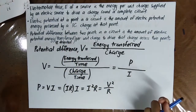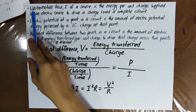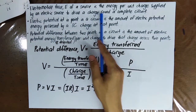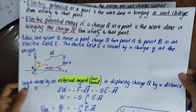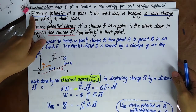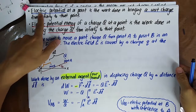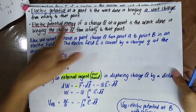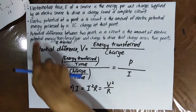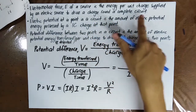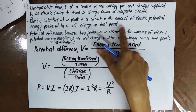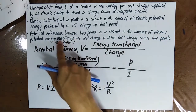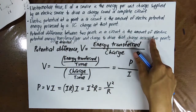If you are asked to give the definition of electromotive force, this should be your answer: the electromotive force E of a source is the energy per unit charge supplied by an electric source to drive a charge around a complete circuit. You still remember what we learned in the electrostatics chapter? The electric potential at a point in a direct current circuit is the amount of electric potential energy possessed by one coulomb charge at that point. Therefore, the electric potential difference between two points is the amount of electric potential energy transferred or dissipated per unit charge to drive that charge across two points.